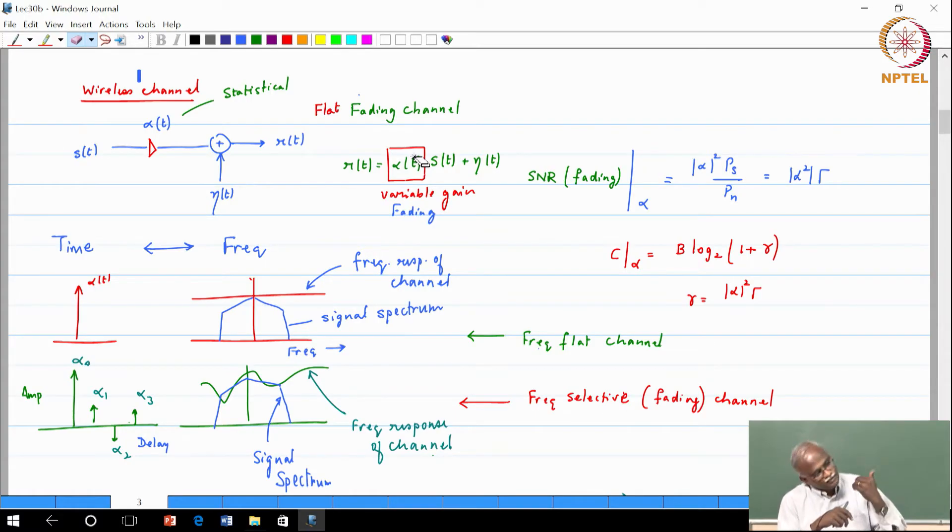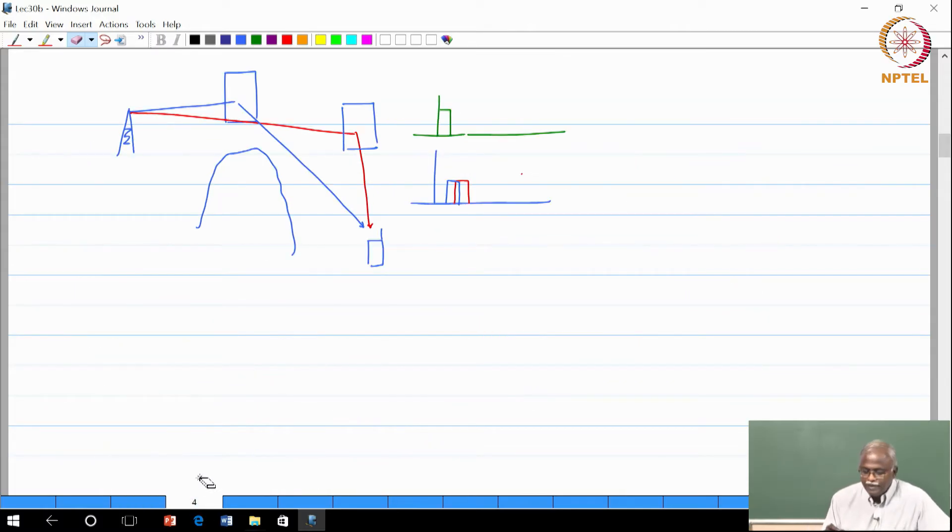The receiver based on the measurement of alpha will be able to get an idea of the channel state information. But that would require you to have a coherent receiver. Coherent receivers automatically will know what the channel conditions are and accordingly - for example if alpha is very small then you will know that you are in very bad channel conditions because the noise level - very interesting thing. The noise level does not change.